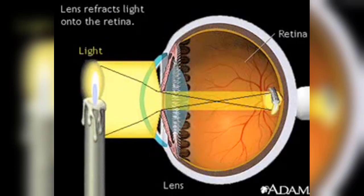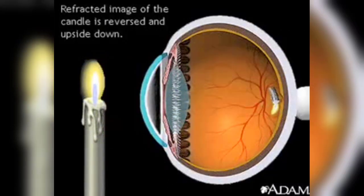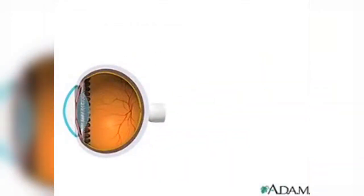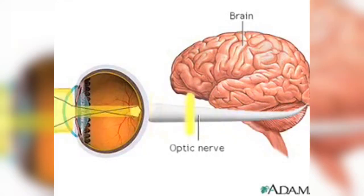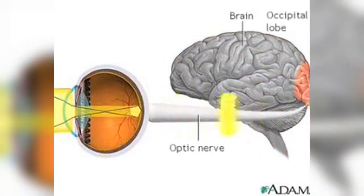The retina is the light-sensitive part of the eye. This double refraction causes the image of the candle to appear reversed and turned upside down on the retina. Fortunately, that's not the end of the story, or the world would appear upside down. The image gets turned right-side up in the brain, which is connected to the eye by the optic nerve. Impulses travel down the optic nerve to the occipital lobe of the brain, which then interprets the image of the candle in the correct perspective.